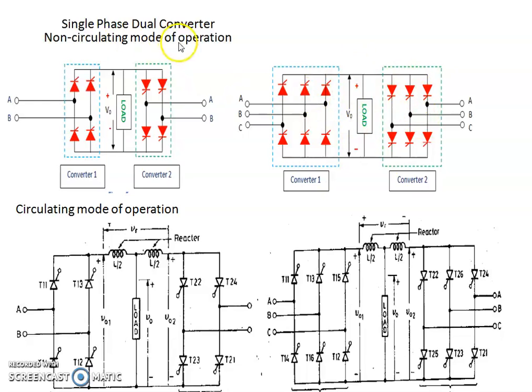In non-circulating mode of operation, either converter 1 or converter 2 operates. With non-circulating current dual converter, only one converter is in operation at a time, and it alone carries the entire load current. Only this converter receives the firing pulses from the trigger control. The other converter is blocked from conduction. Thus, only one converter is in operation at a time, whereas the other converter is idle.